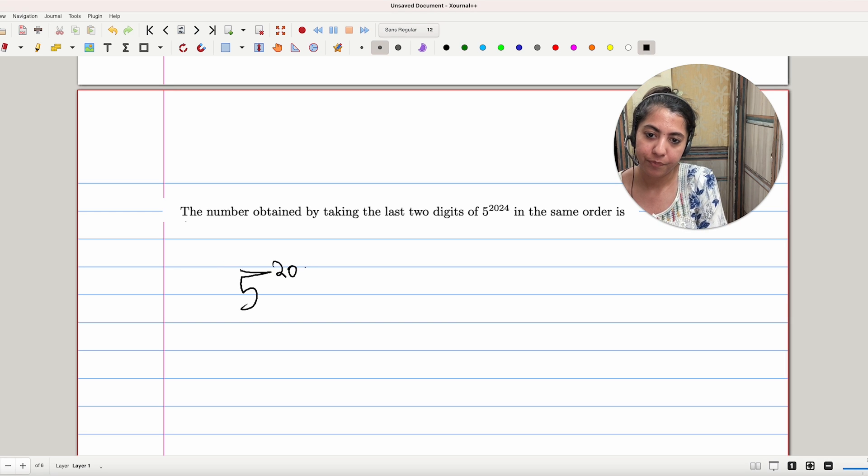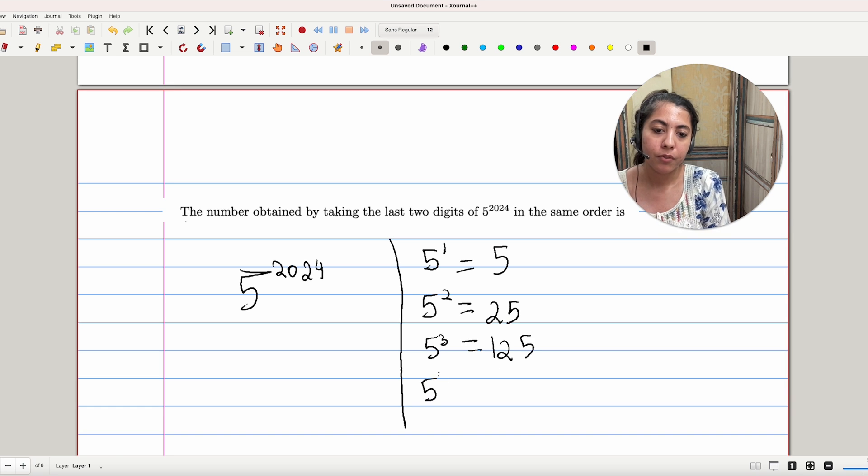Let's see: 5 to the power 1 is just 5, 5 to the power 2 is 25, 5 to the power 3 is 125, and 5 to the power 4 is 625.